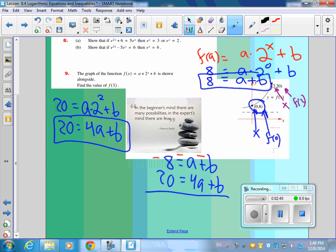20 minus 8 is 12. 4a minus a is how many a? 3a, and then b minus b is 0.